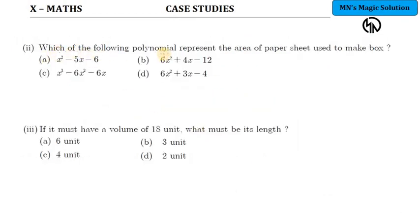Second subdivision: which of the following polynomial represent area of paper sheet used to make the box. Area of paper sheet used is nothing but TSA. TSA of a cuboid is nothing but 2 into LB plus BH plus HL.